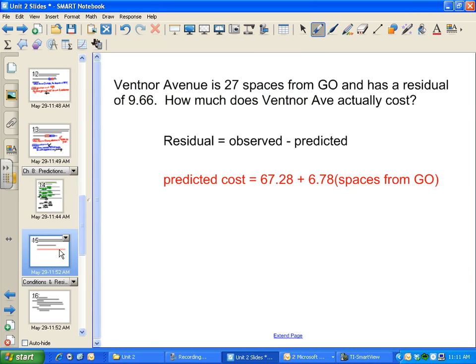Another situation where you'll see residuals—here's a story problem. Ventnor Avenue is 27 spaces from GO and has a residual of 9.66. How much does Ventnor Avenue actually cost? I can figure that out using the residual formula. I'll plug in the pieces I know and solve. The actual cost is the observed value. The residual is 9.66. The observed is what I'm looking for, so I'll substitute a variable like x. It's an algebra problem.